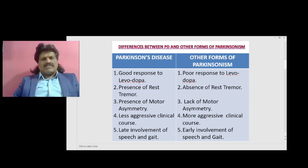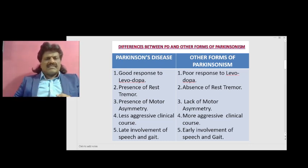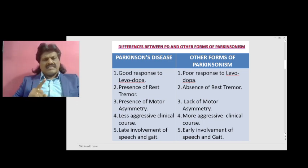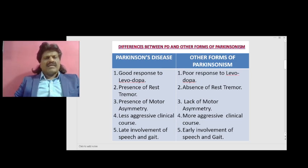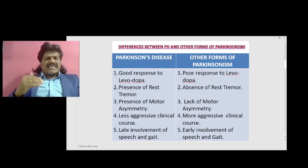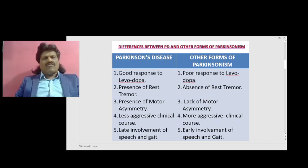What are the differences between Parkinson's disease and other forms of parkinsonism? First, in Parkinson's disease there is a very good response to levodopa, but in other forms there is a poor response. Second, in Parkinson's disease there is a characteristic resting tremor in at least 75% of cases, usually asymmetrical to begin with, whereas in other forms there is absence of resting tremor. Third, there is motor asymmetry in Parkinson's disease but a lack of it in other forms. Fourth, Parkinson's disease has a less aggressive, slow clinical course, whereas other forms have a more aggressive course. Fifth, Parkinson's disease has late involvement of speech and gait, whereas other forms show early involvement of speech and gait.